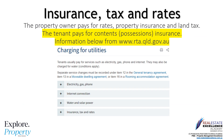During the tenancy agreement it is your responsibility to pay for your own contents and possessions insurance. Refer to the terms of the agreement in relation to electricity, gas, phone, internet, water, or solar power to ensure you're aware of your responsibilities for connections of such services. The property owner pays for rates, property insurance, and land tax. Our agency strongly recommends that you ensure you have contents and possessions insurance.